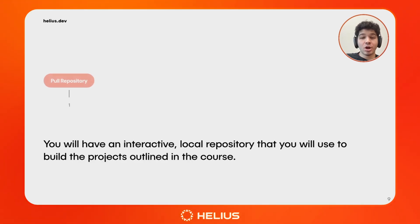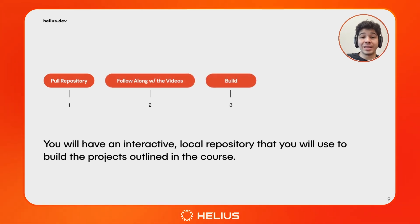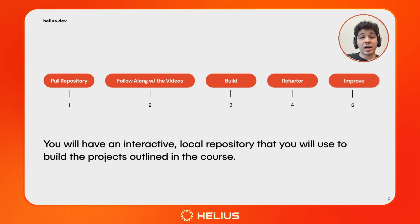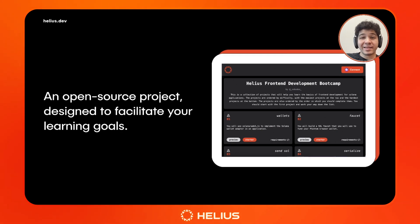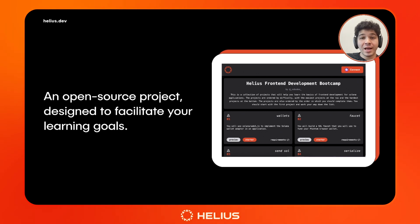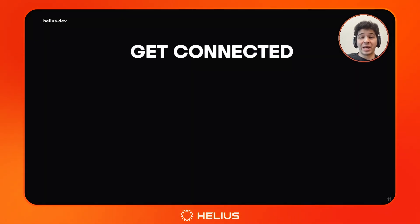But before we begin building any projects, we're going to download and explore an open-source project Helios has developed to facilitate your learning experience. Then you will watch the videos and build the projects in the repo you downloaded as you follow along with the videos. Then we're going to refactor our code, which will reinforce good design practices and Solana front-end development. And finally, I'm going to challenge you to extend your learning and make the project your own. The open-source project Helios has prepared for you is a React application that you will use locally to follow along with this video series. It neatly outlines each project and sequence and gives you a finished reference of what each project is supposed to do, with comments on each line of code that explain the program. For each project, it also contains a starter template where you will build out your own version.